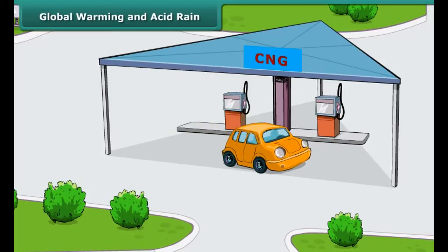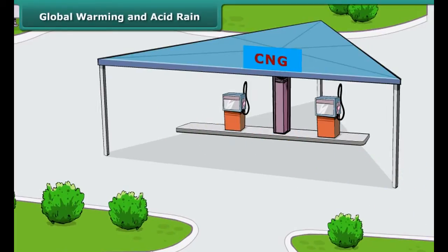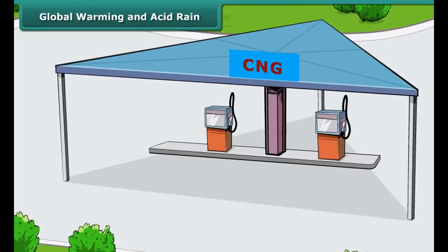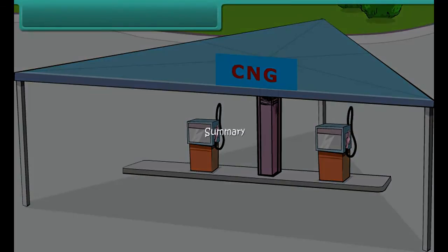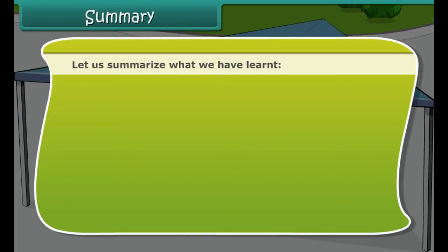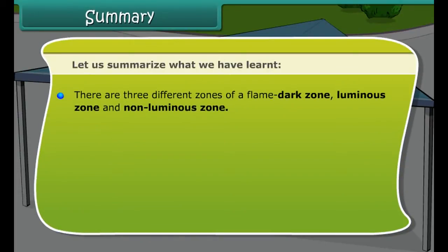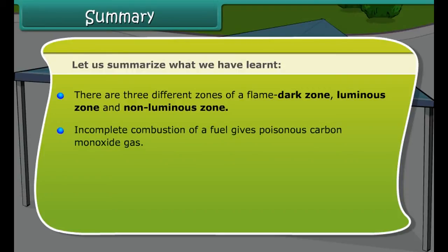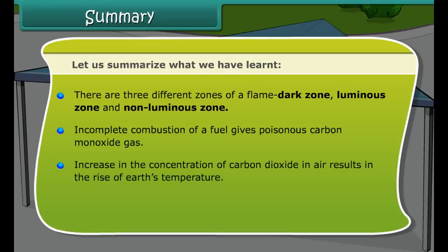Summary: Let us summarize what we have learned. There are three different zones of a flame: dark zone, luminous zone, and non-luminous zone. Incomplete combustion of a fuel gives poisonous carbon monoxide gas. Increase in the concentration of carbon dioxide in air results in the rise of Earth's temperature. Acid rain contains oxides of sulfur and nitrogen in dissolved state.